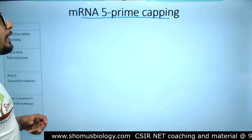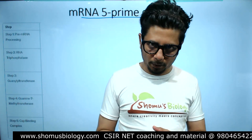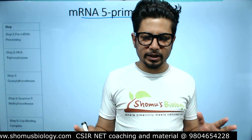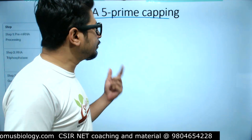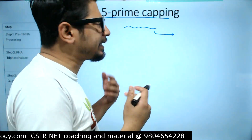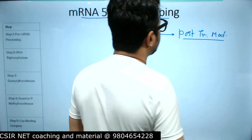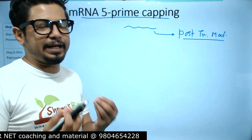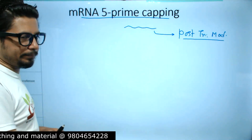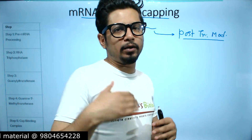We'll be talking about the 5' capping of eukaryotic mRNA. In eukaryotes, the process after transcription is a little more complicated compared to prokaryotes. In prokaryotes we have simple transcription — DNA to RNA to protein — with no intermediate modifications. But in eukaryotes, the RNA produced after transcription needs to be modified. This post-transcriptional modification is very important. 5' capping, 3' polyadenylation, and splicing are all specific to the eukaryotic system, not found in prokaryotes.